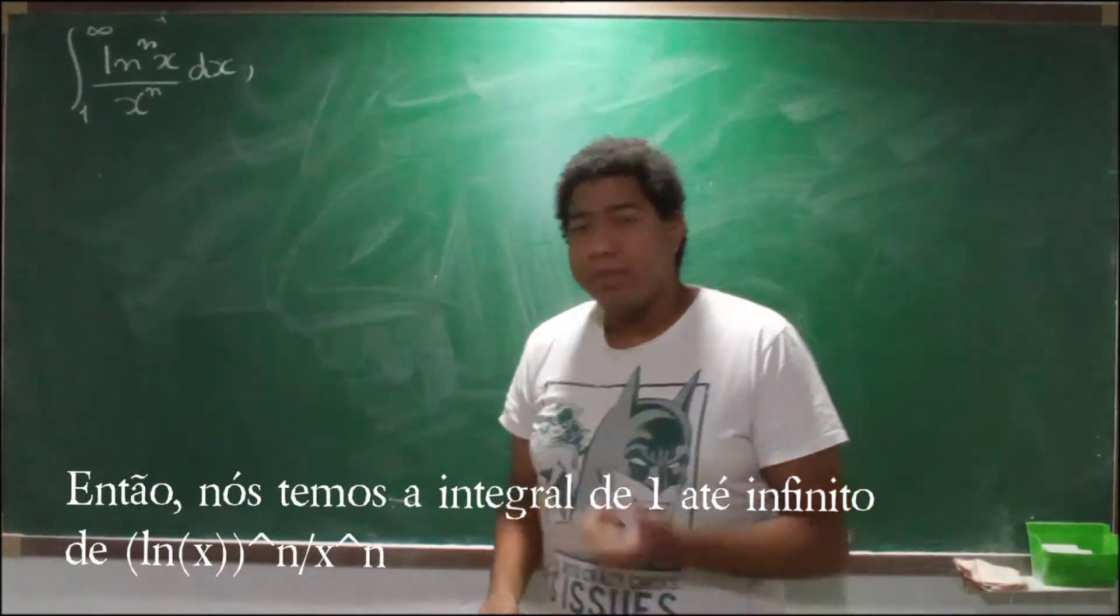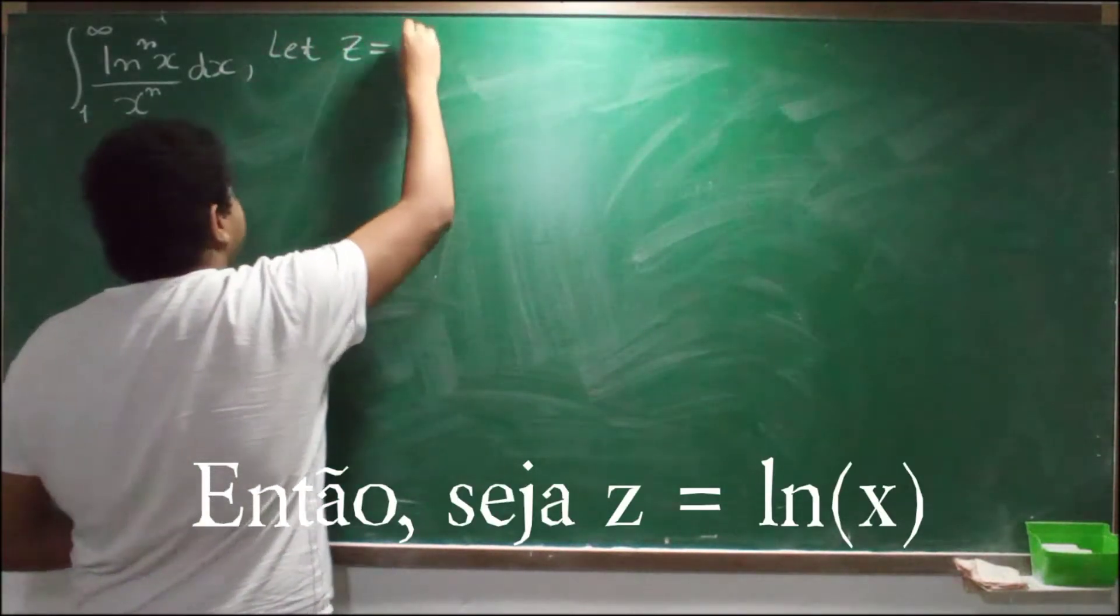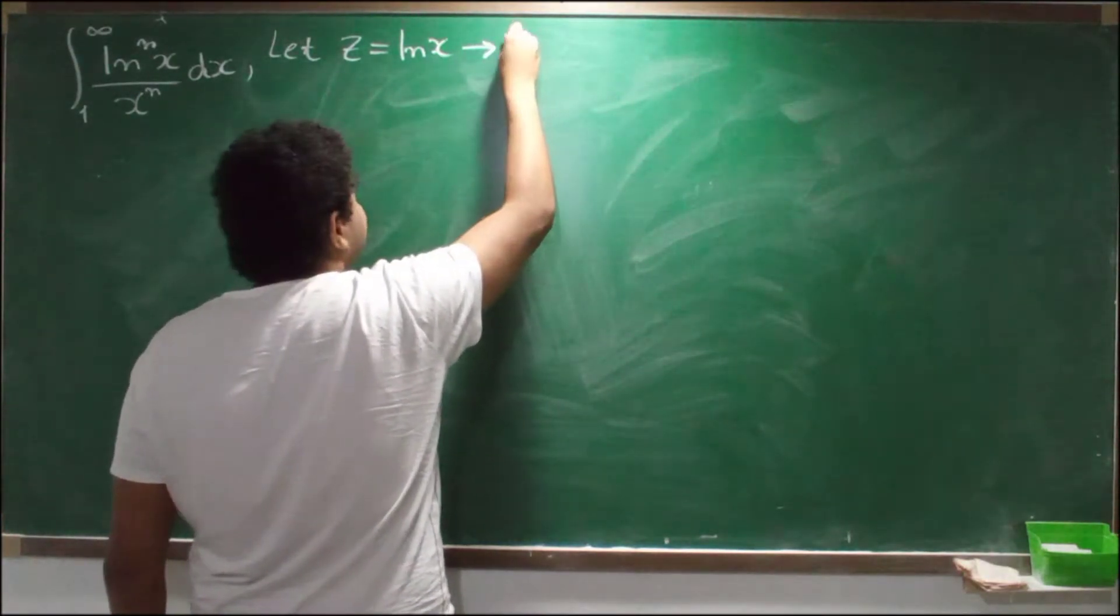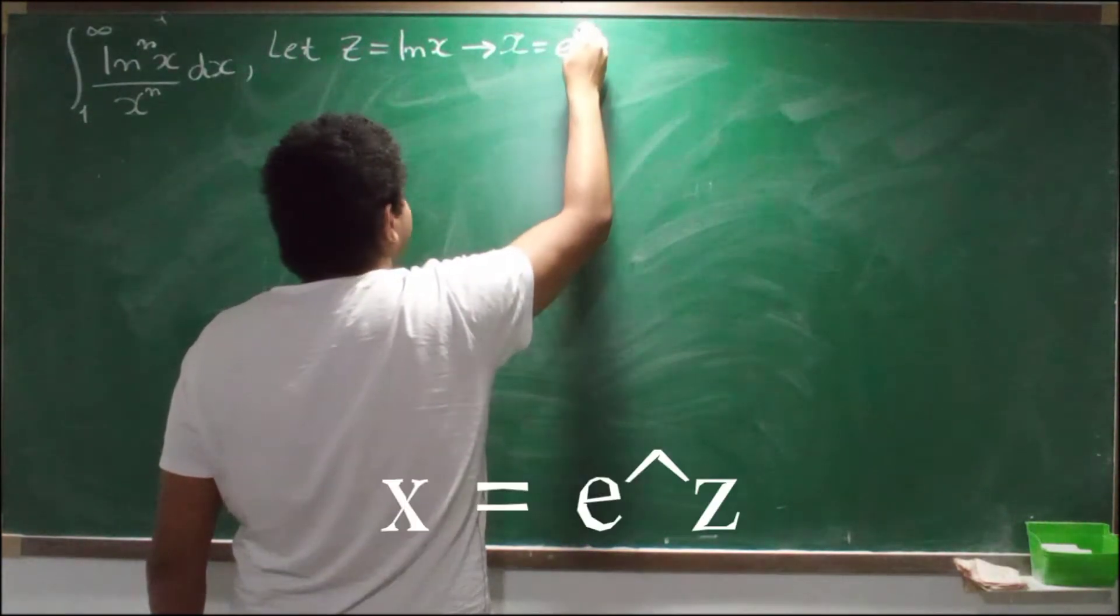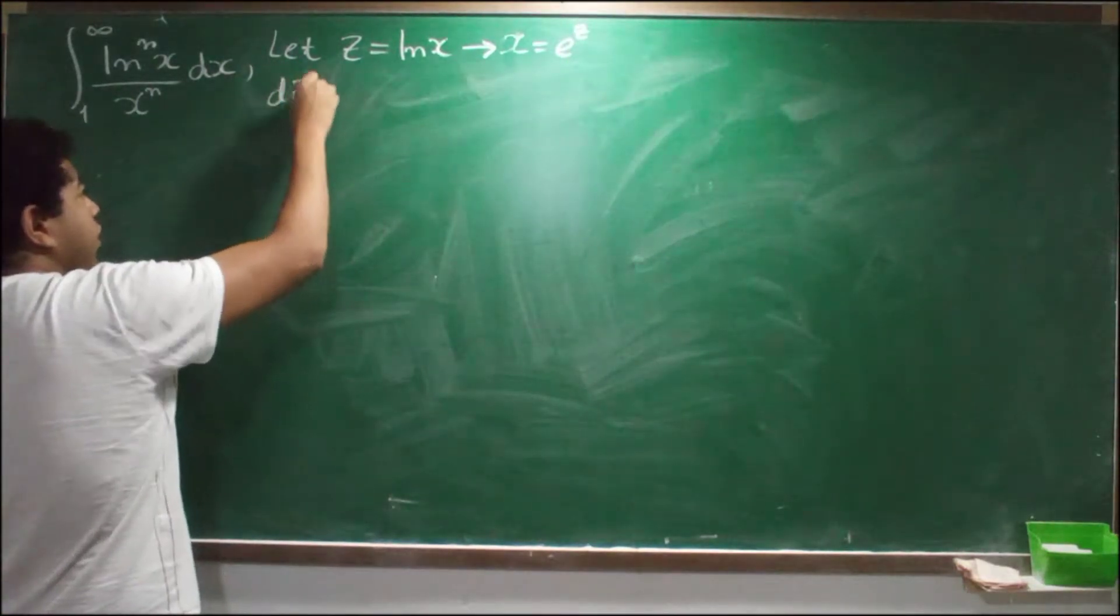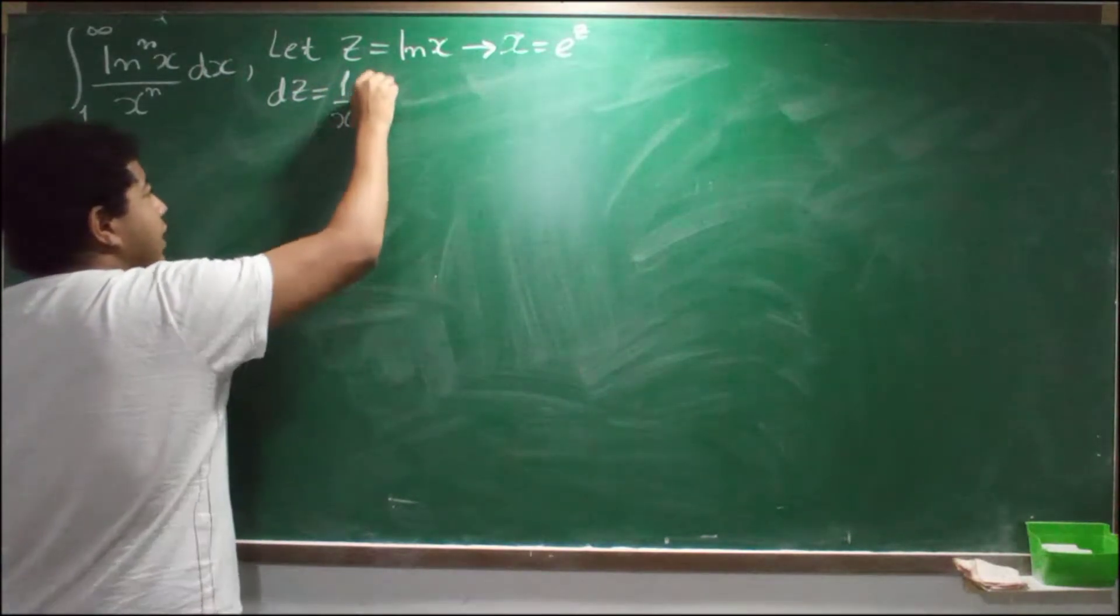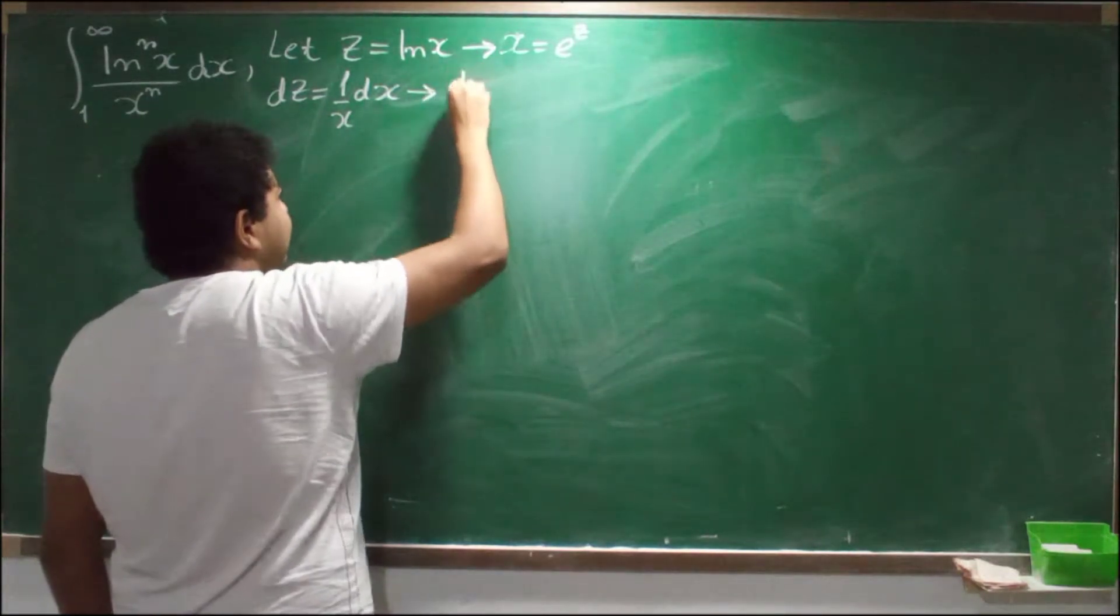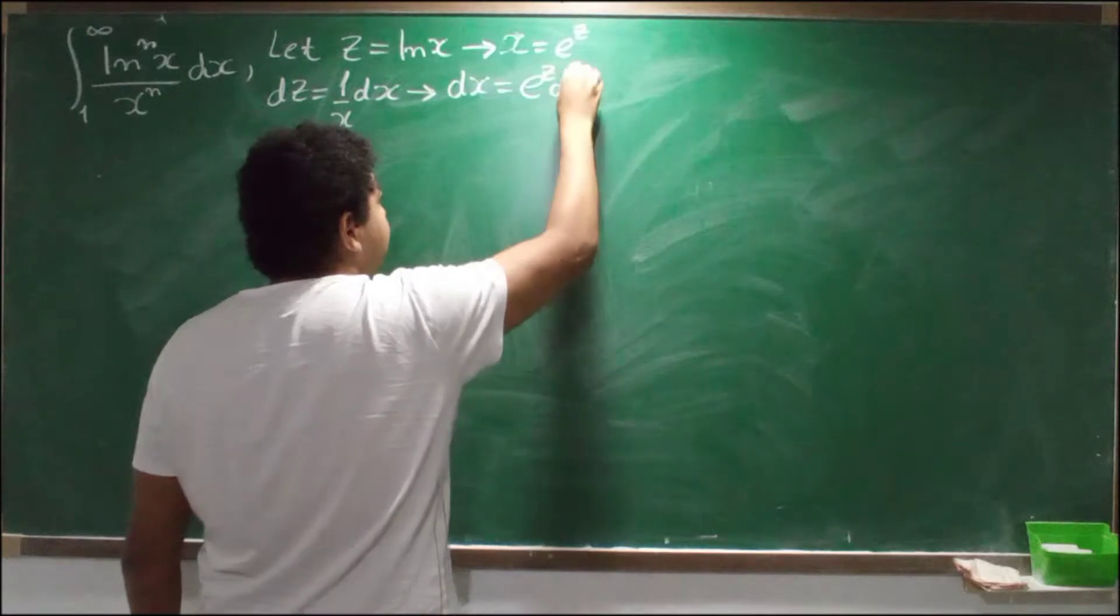So let z be equals to ln of x. This is equal to say that x is equal to e to the z, and dz will be equals to 1 over x dx, and this is equal to dx equals to e to the z times dz.